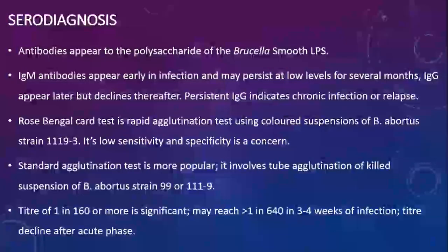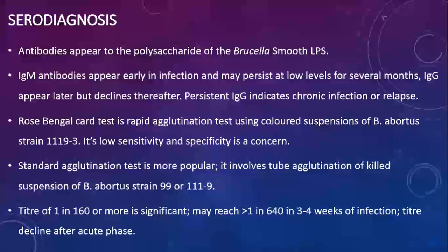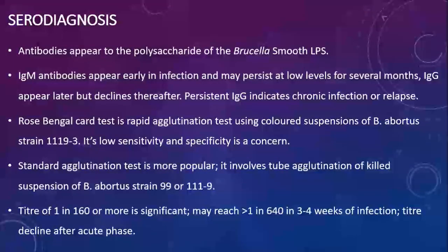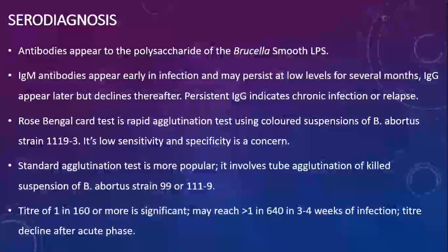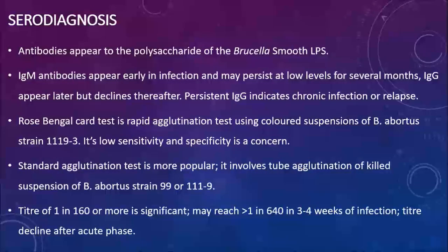Because culture is not available in many places, is difficult, and is dangerous, most physicians prefer serodiagnosis. Serodiagnosis detects antibodies against Brucella antigens. Antibodies to smooth lipopolysaccharide appear in early infection as IgM, which persist at low levels for several months then disappear. IgG appears later but also declines once the patient recovers. If IgG is present, it indicates chronicity. Presence of IgG indicates chronic infection or possibly relapse.